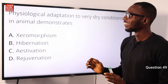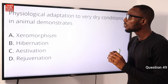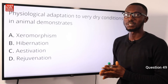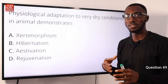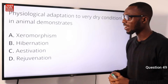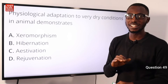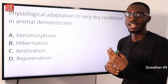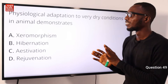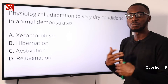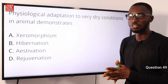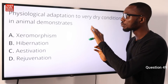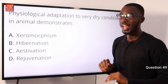Question 49: Physiological adaptation to very dry conditions in animals demonstrates what? This demonstrates estivation. Examples include lungfish, snails, and others. Hibernation is on the other side — that is for the winter period. Xeromorphism is the adaptive ability of xerophytes. So the correct option to this question is option C, estivation.